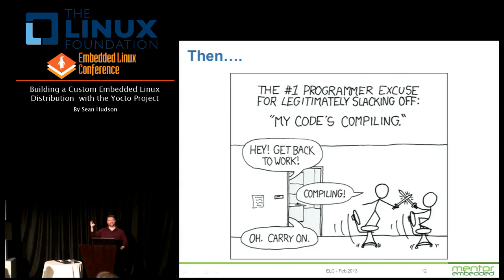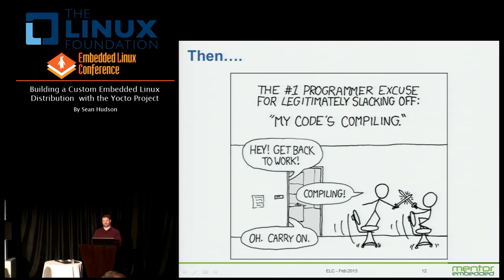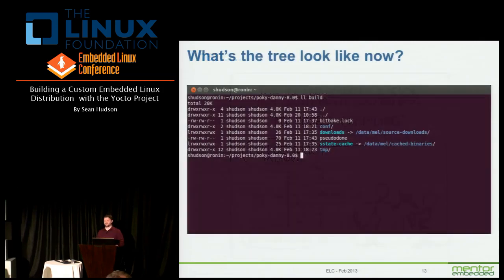An initial build depends on machine speed and network speed. You can pre-download a large chunk of source — that's one of the things Mentor Embedded Linux pre-loads for you. It can typically take between one and two hours, which is very common for a Sato build. This workstation here — a baby server, really — takes about 88 minutes for an initial Sato build. Be prepared the first time. It takes a substantial amount of time, but subsequent builds take a lot less.